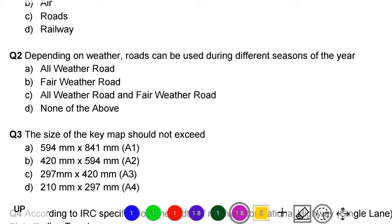Next question: depending on the weather, roads can be used during different seasons of the year. Option A: all weather road. Option B: fair weather road. Option C: all weather road and fair weather road. Option D: none of the above. The correct answer is option C, all weather road and fair weather road.